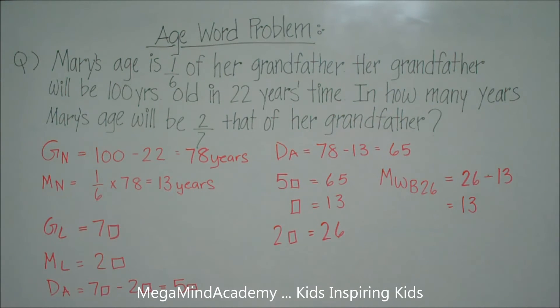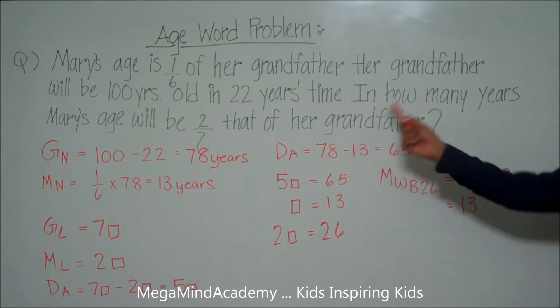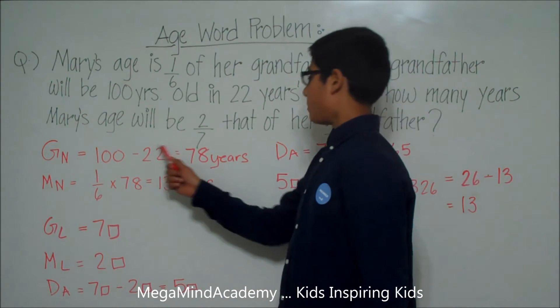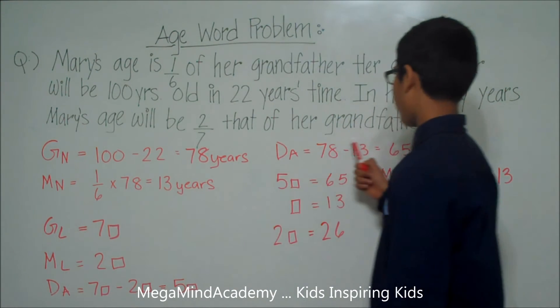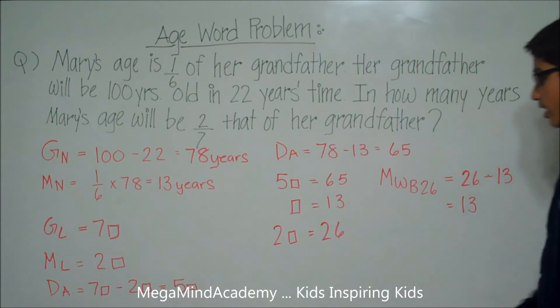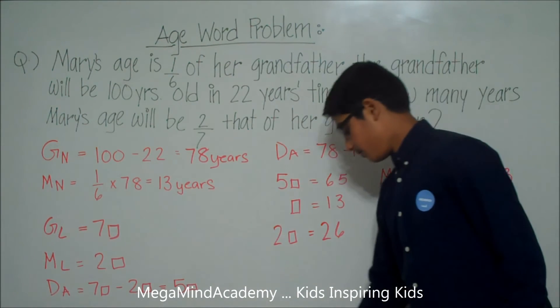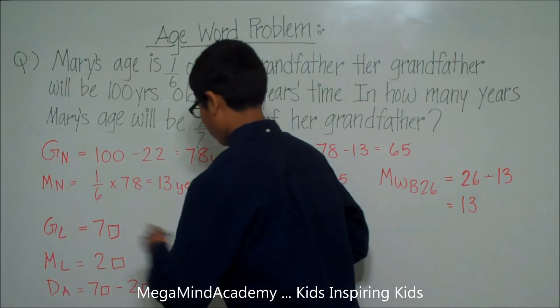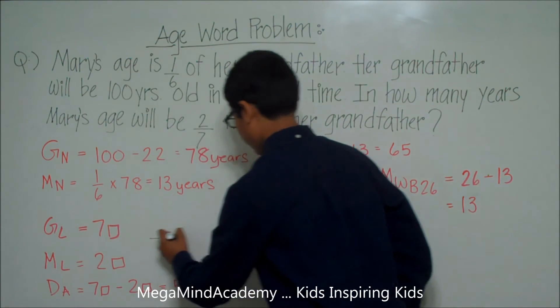The answer to this problem — in how many years will Mary's age be two-sevenths of her grandfather's — is 13 years.